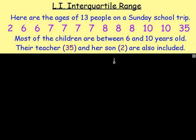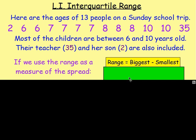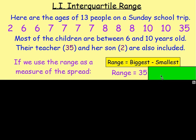Everybody else is between 6 and 10. Now if we were looking at the spread of that data, we would use the range. The range is when you take the biggest number minus the smallest number. So the biggest number — the oldest person — is 35 years old, and the littlest one is 2, which gives us a range of 33.